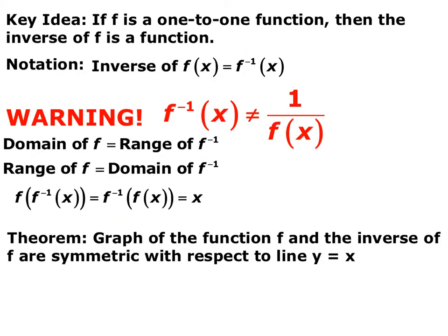Here are some notes on one-to-one functions and their inverses. For a function to have an inverse that is also a function, the original function must be one-to-one. Every function can have an inverse, but its inverse may not itself be a function. The notation for an inverse function is f⁻¹ — it does not mean f to the negative one power or take the reciprocal. The domain of the original function is the range of the inverse, and the range of the original is the domain of the inverse. Taking the composite of a function and its inverse in either direction always gives x — that's how we test if two functions are inverses. If you graph a function and its inverse, they are symmetrical about the line y = x.